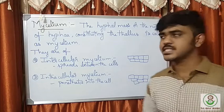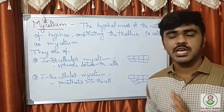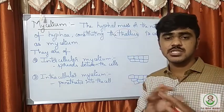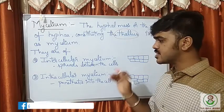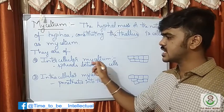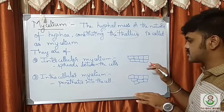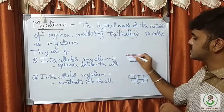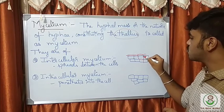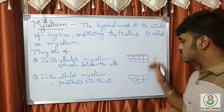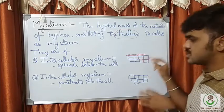Now we shall see the mycelium. Mycelium is the mass or network of hyphae, and it includes the thallus. The network of hyphae constituting the thallus is known as mycelium. There are two types: intercellular mycelium and intracellular mycelium. In intercellular mycelium, the fungi spread over the host surface and move between the cells — in the gaps between cells — and use haustoria to suck nutrients from the host.